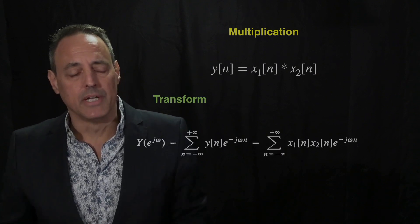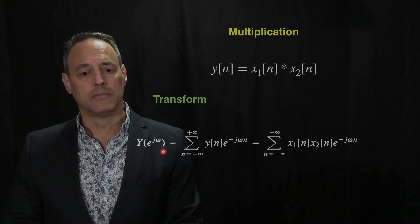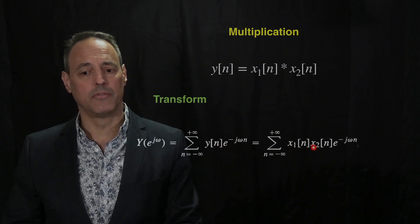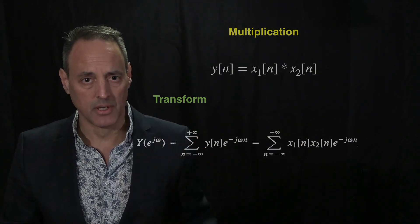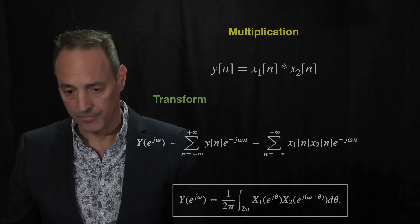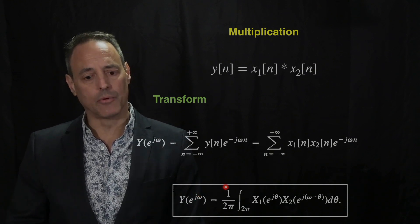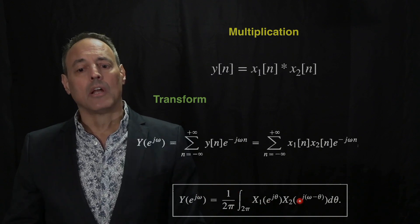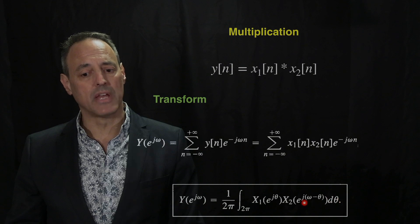Let's Fourier transform this. On the left you have the Fourier transform of y, where y itself is the product of x₁ and x₂, each having their own Fourier transforms. If you substitute those Fourier transforms and work through the algebra, the representation of y in the Fourier domain is (1/2π) times the Fourier transform of x₁ convolved with the Fourier transform of x₂, integrating over θ.